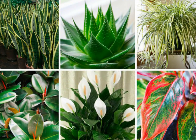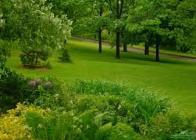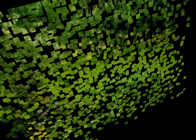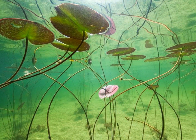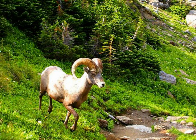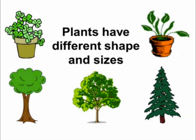Plants. Plants are living things that are usually rooted in the ground or live in water. Plants, unlike animals, cannot move from place to place. Plants come in all colors, shapes and sizes.